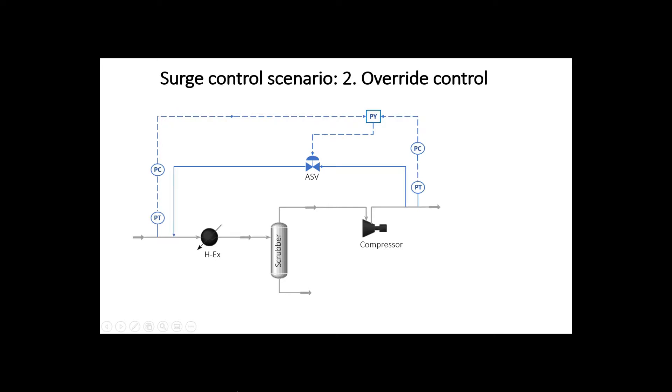Now let's look at another example where we employ override control. To recall, override control involves selection between two controller output signals where only one controller gets the opportunity to control a process and the other one is overridden by the selected controller.